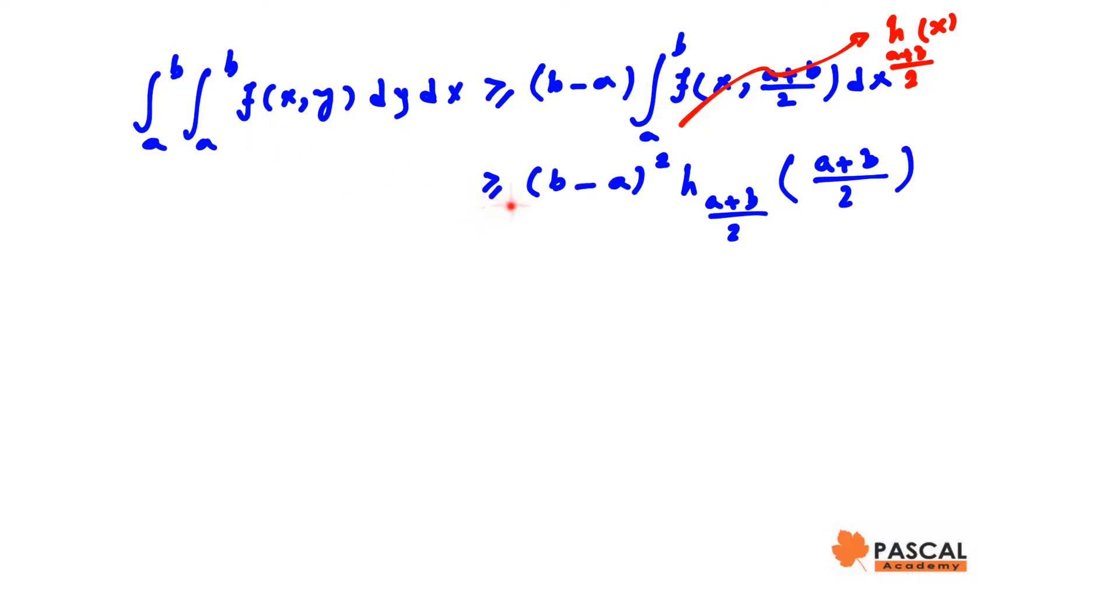The given integral is greater than or equal to (b-a)² times h((a+b)/2) when y is (a+b)/2, which equals (b-a)² times f((a+b)/2, (a+b)/2).